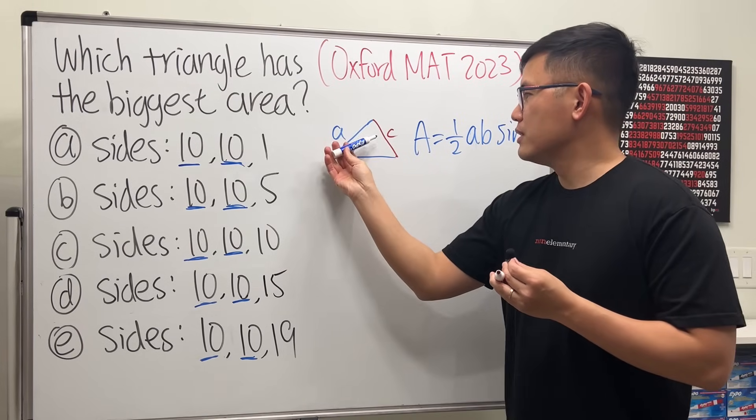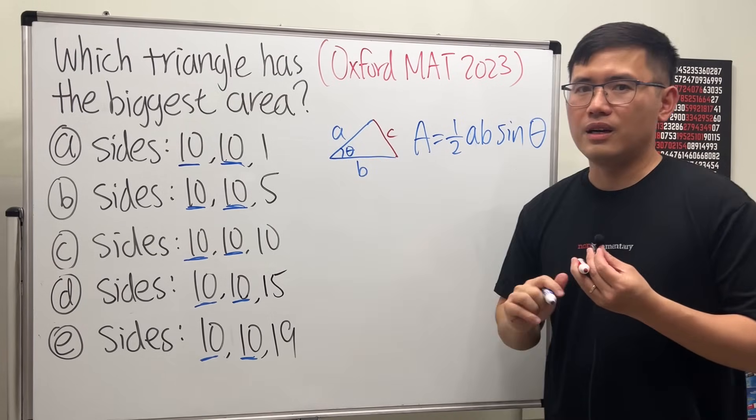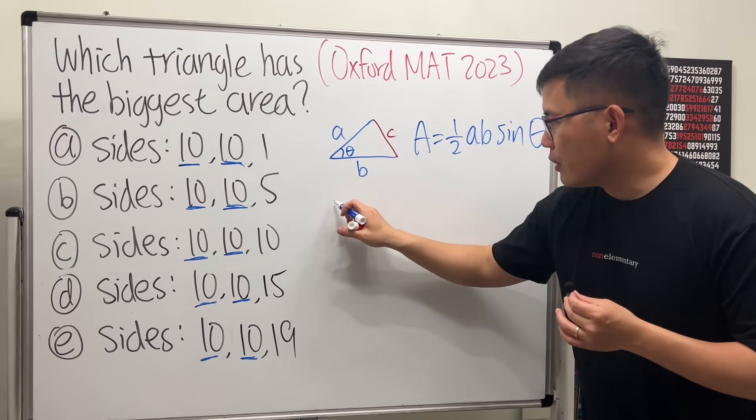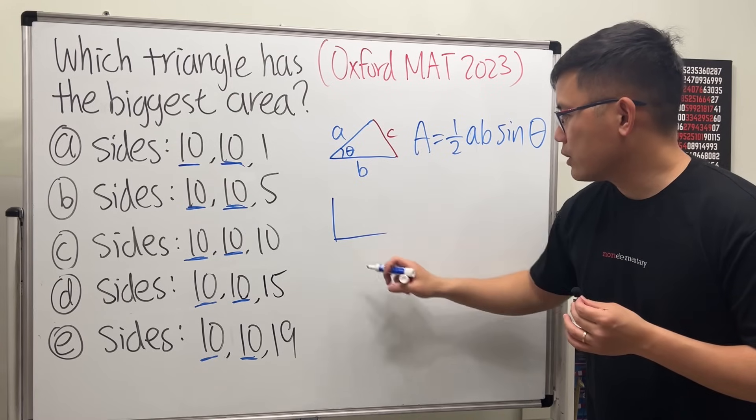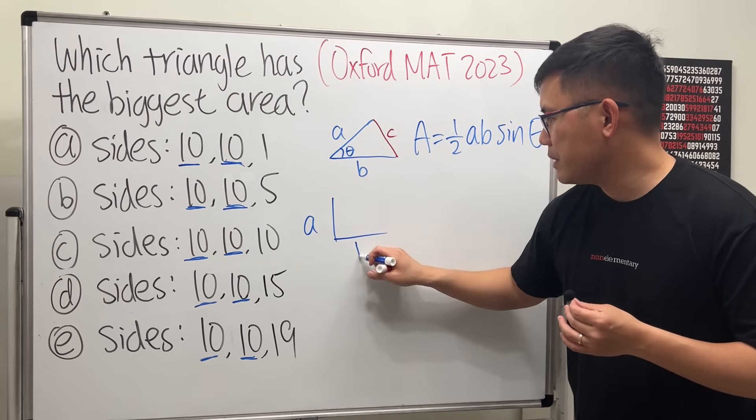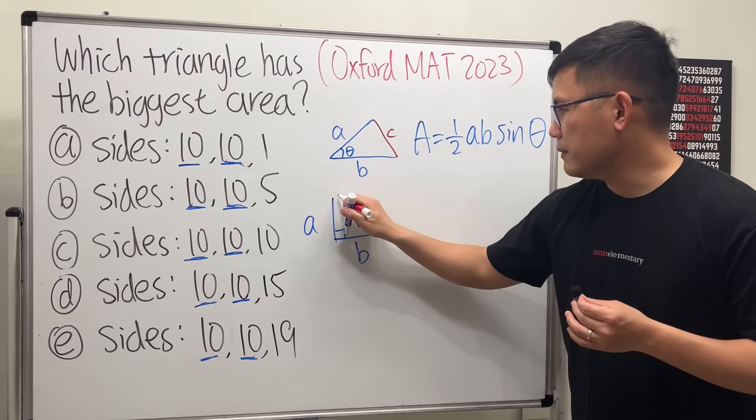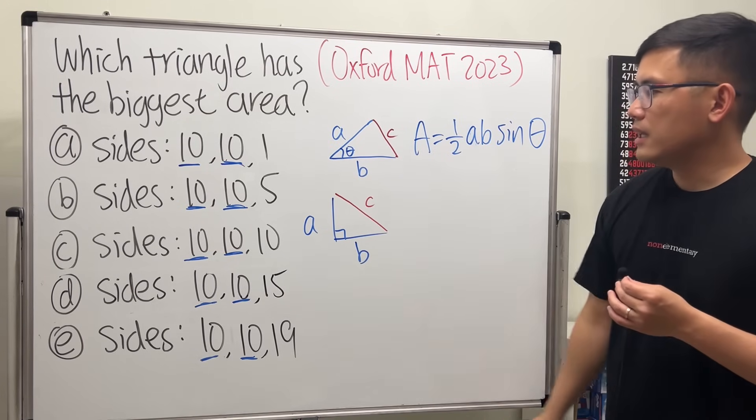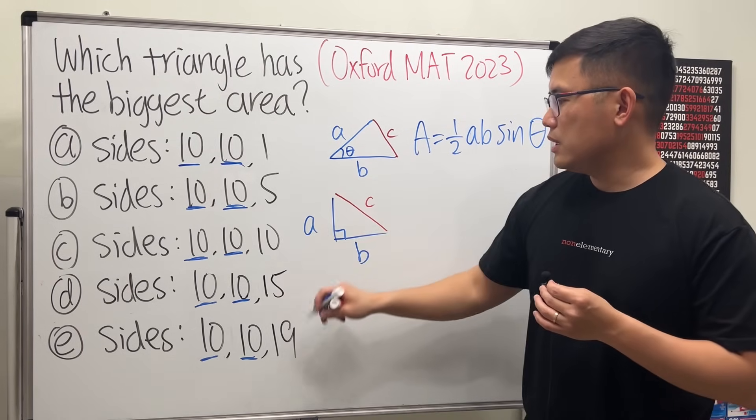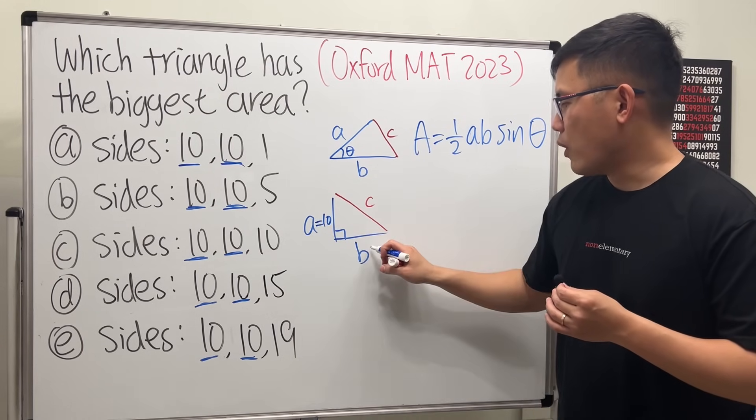So we just have to turn this into a right triangle. We have a right triangle like this, a and b with a 90 degree angle here and c. And as we can see, we have 10 for these two sides.